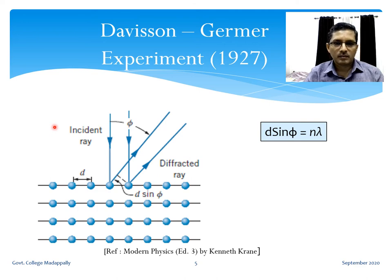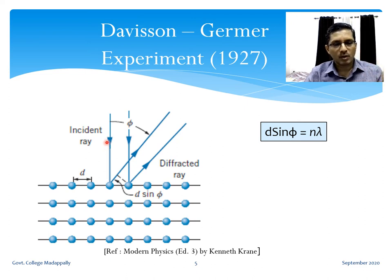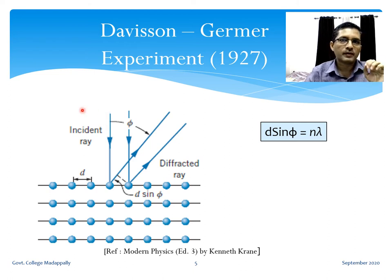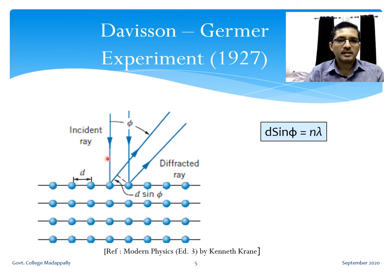Now let us calculate the condition for diffraction. At 54 volts, the kinetic energy of the electron beam is 54 electron volts. This is actually a low energy beam. When the kinetic energy is low, the electron beam will be scattered from the atoms on the surface layer; it will not have enough kinetic energy to penetrate beyond the surface level into the depth of the crystal. So the scattering will happen only from the surface layer.